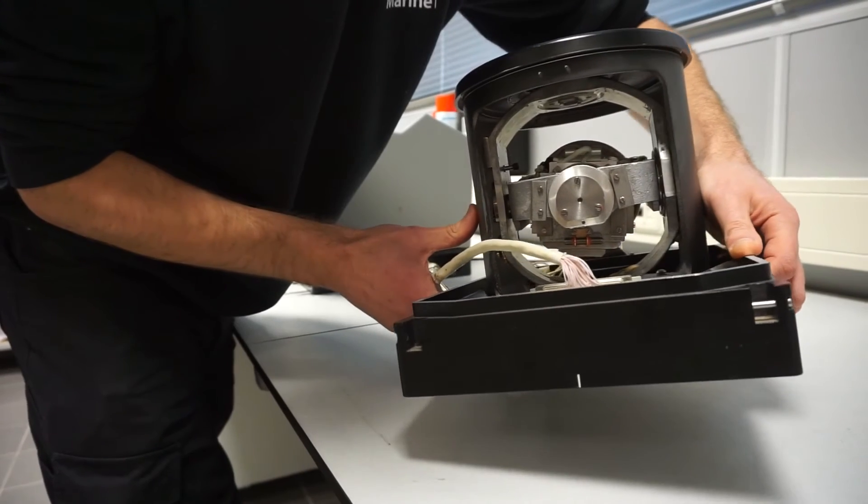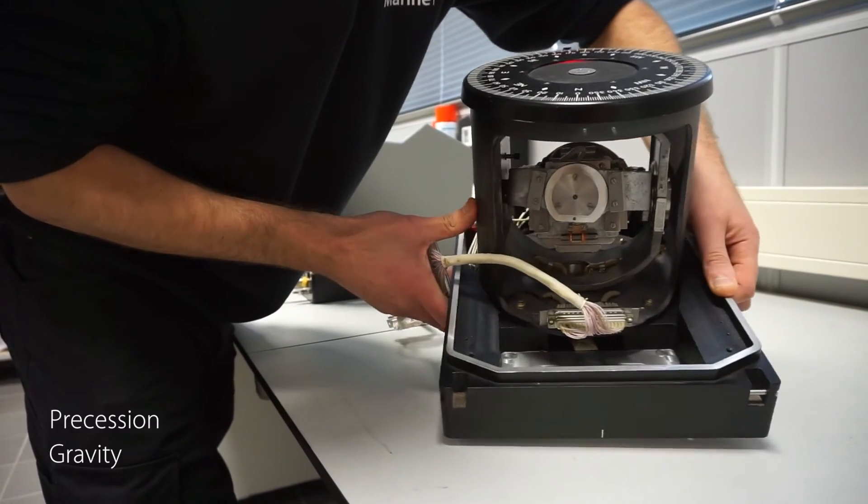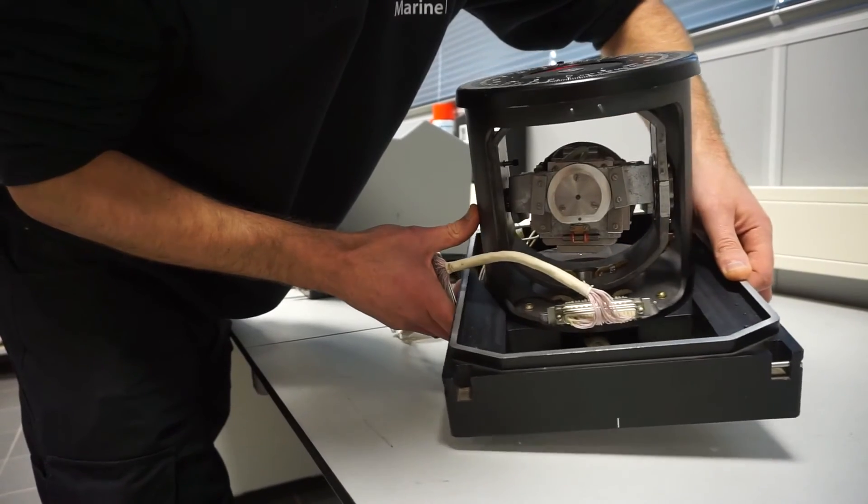It's the mechanism of gyroscopic inertia combined with precession, gravity and the Earth's rotation that make a gyroscope north seeking.